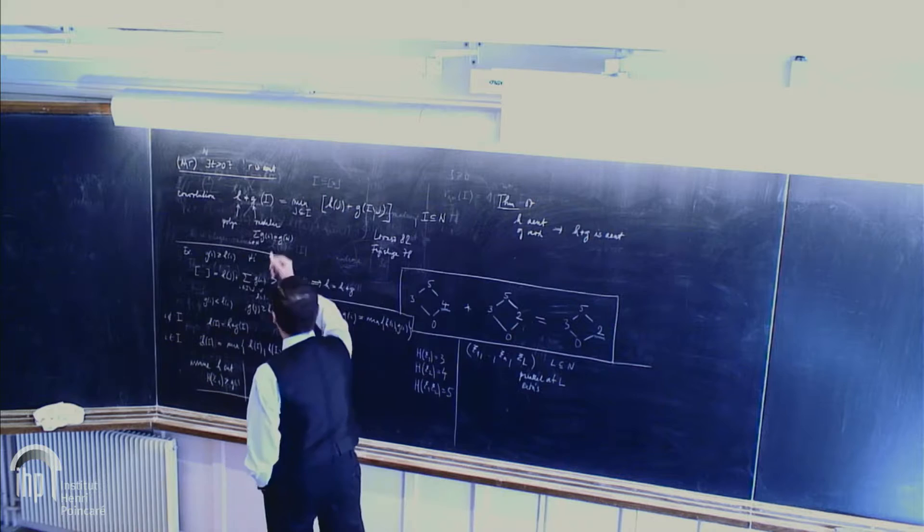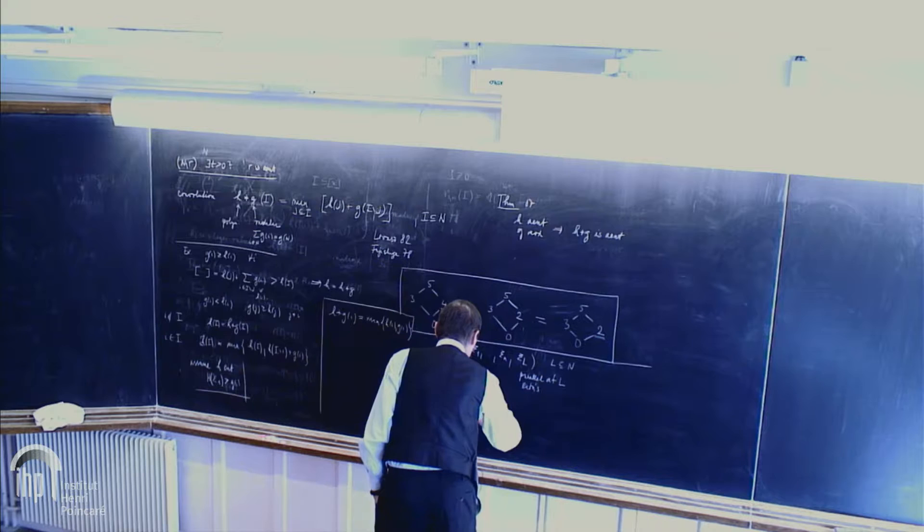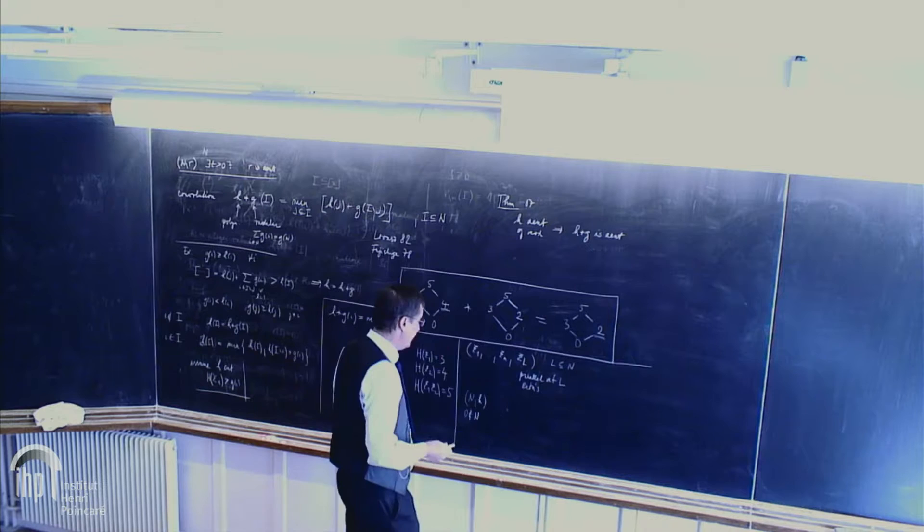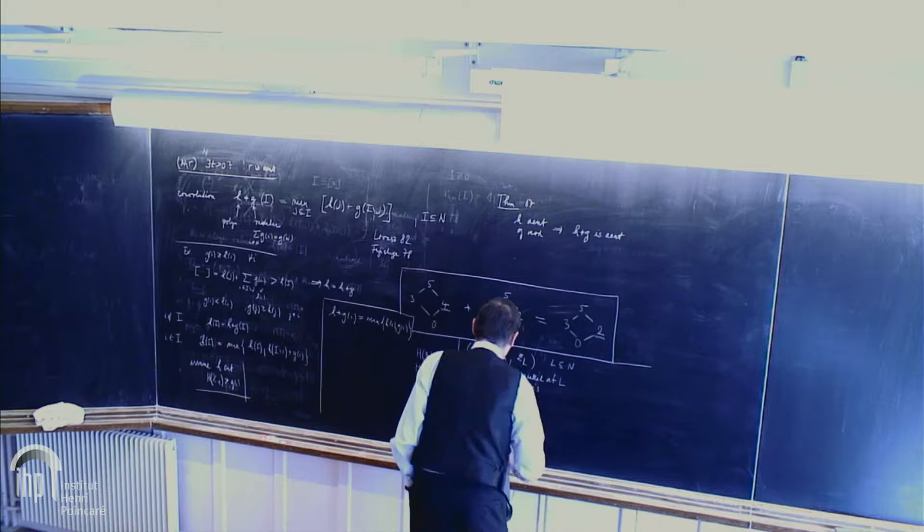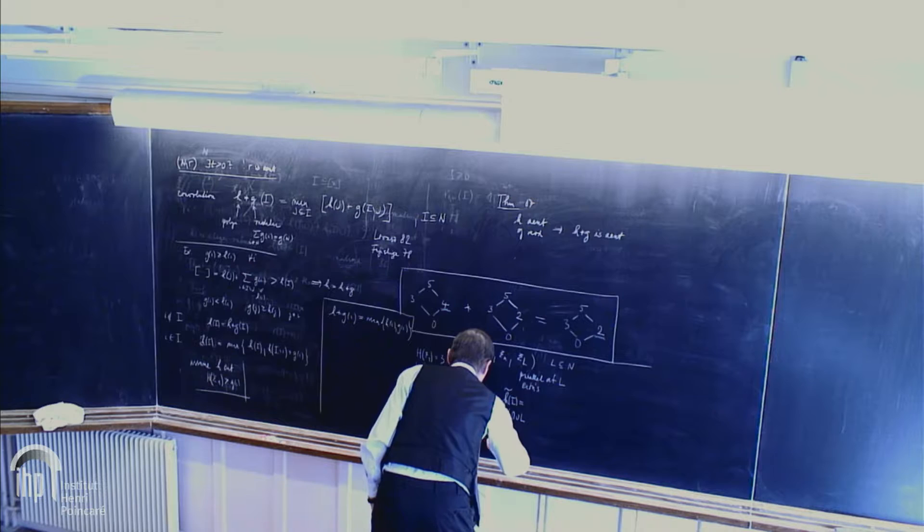So this is on the level of variables, but on the level of polymatroids, one would say, OK, I have polymatroids and H. I have some elements that usually denote by zero, which is outside, and want to extend. So what do I do? It's extension, that means it's the same. Yes, extend to N union zero H tilde.